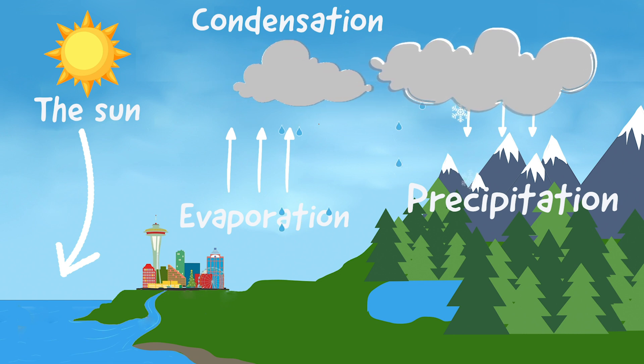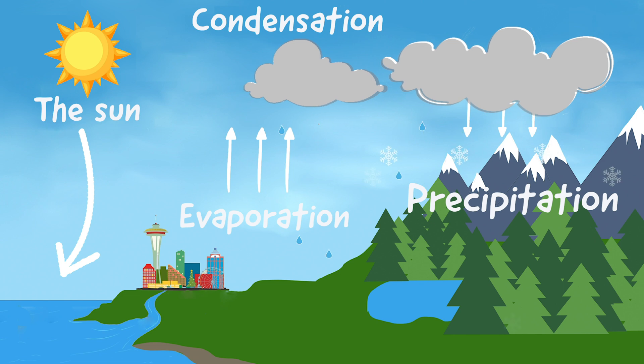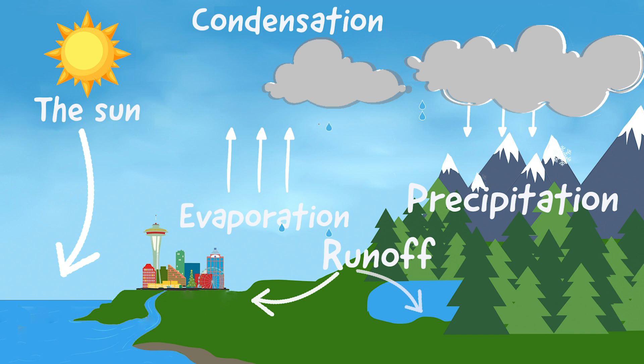Precipitation falls down to the earth. As rain falls or snow, sleet, and hail melt, it flows downhill as runoff. Runoff eventually collects in lakes, streams, ponds, and puddles. We call this accumulation.